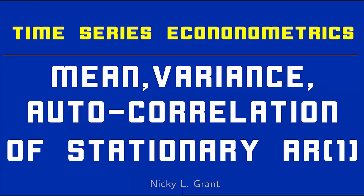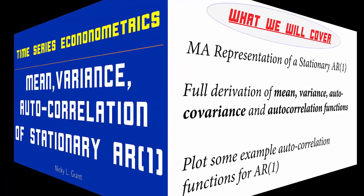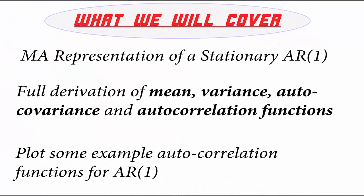In this clip, we will formally derive the mean, the variance, and the autocorrelation and covariance function of an AR1, or autoregressive, process. To do this, we'll firstly derive the MA infinity representation of the stationary AR1, and then using this, we'll show how we can derive the mean, the variance, and the covariance function. Finally, we'll provide a plot of some of the correlation functions for some example AR1 processes.